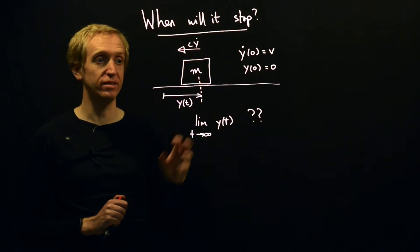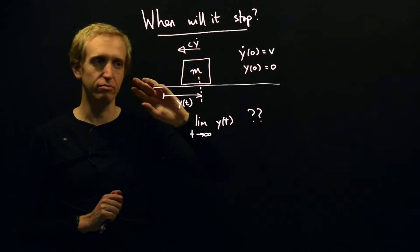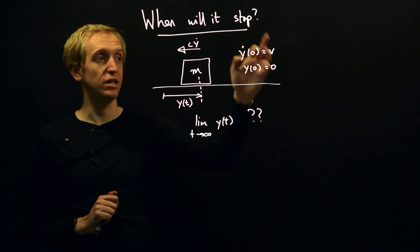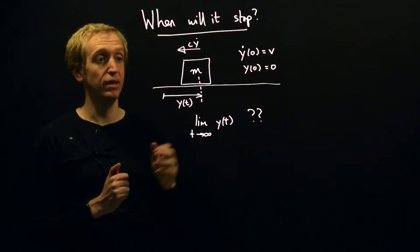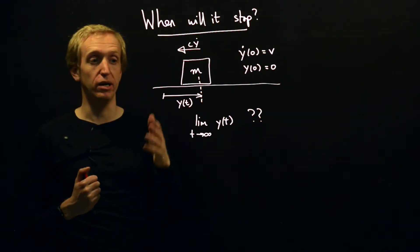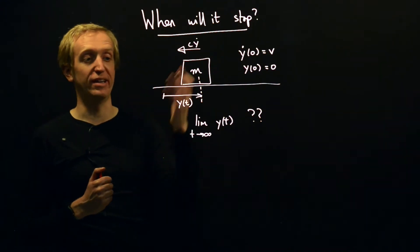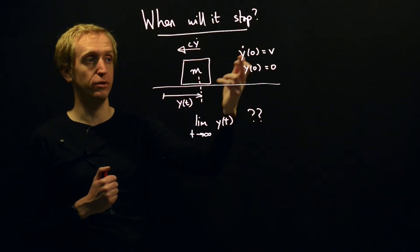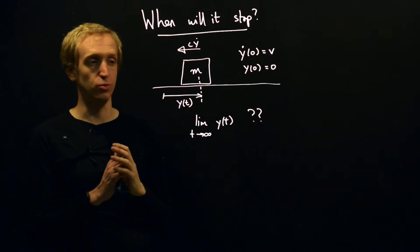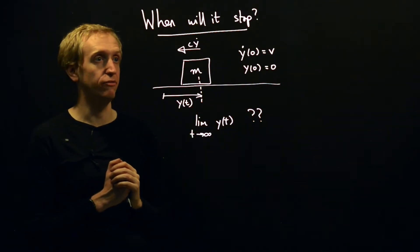Suppose we have some mass and it's sliding along the road. So maybe this is some car and it's moving along and it starts off at time t equals zero with some initial velocity v. And we've got a variable y, which gives us the position of the car relative to some arbitrarily chosen initial point. And in fact, we choose our initial point so that at time t equals zero, the position of the car is y equals zero, and then y(t) just tells you what the position of the car is in the future.